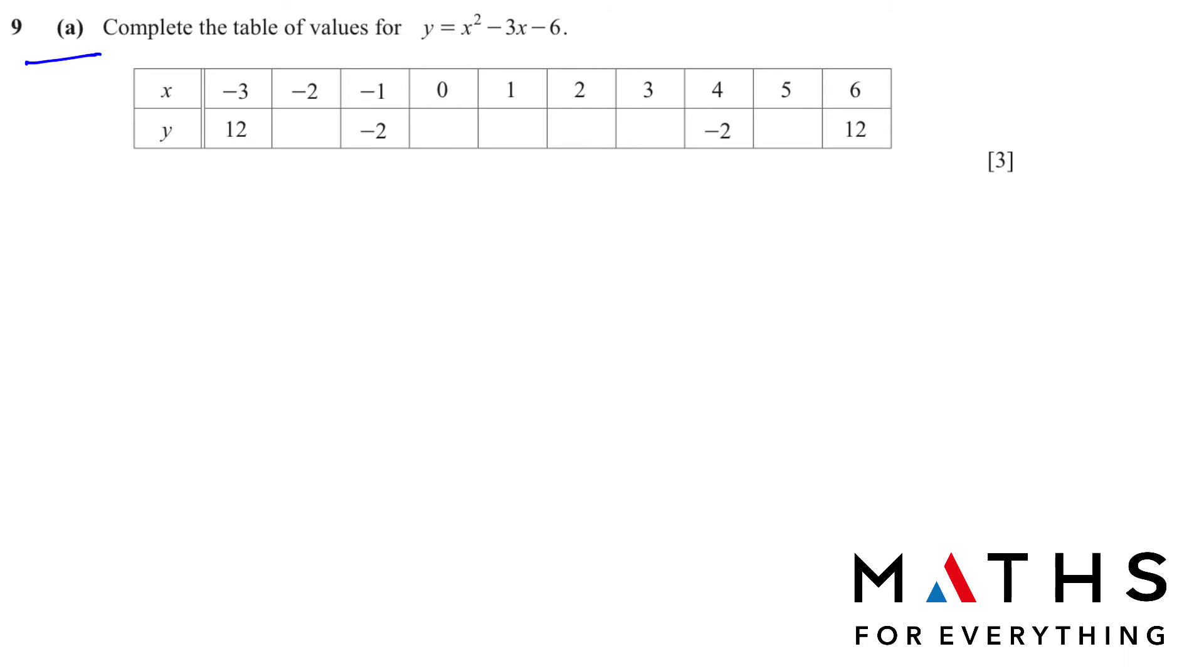Question number 9(a): Complete the table of values for y = x² - 3x - 6. We just replace the X value in the calculator. Just be careful - if you have -3, don't write like this, put in a bracket and write your value and you will get the answer. -3 we already have, so -2, 0, 1, 2, 3, in the same manner replace it. Very easy 3 marks. These are the values that we will get.